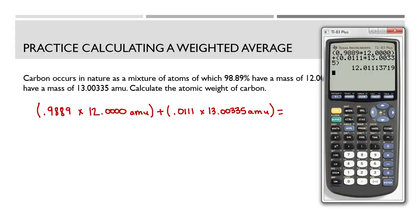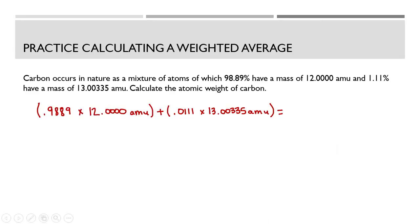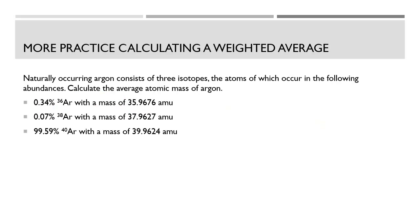The answer is 12.01 AMU. This should make perfect sense — it's very close to 12 because most carbon has a mass of 12 AMU. That small 0.01 exists because a tiny 1% of carbon is the heavier isotope at 13.00335 AMU. That small fraction of heavier atoms causes the overall average to increase just a tiny bit, giving us the 0.01.